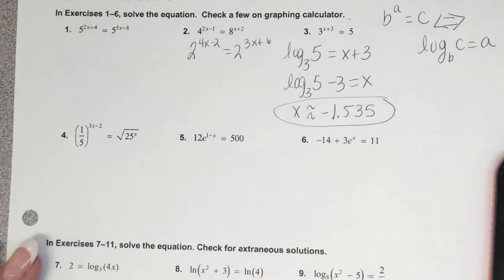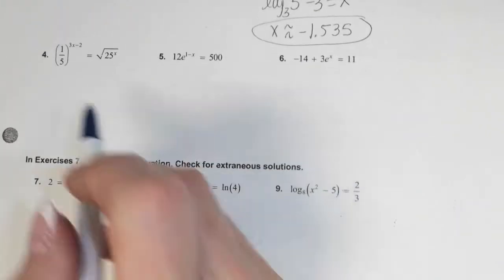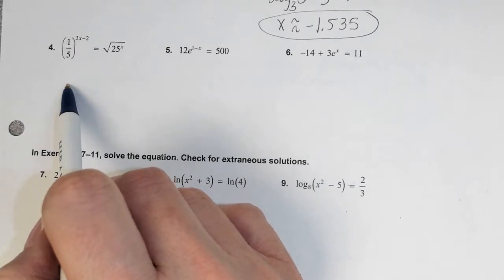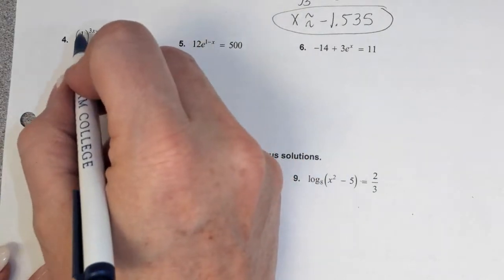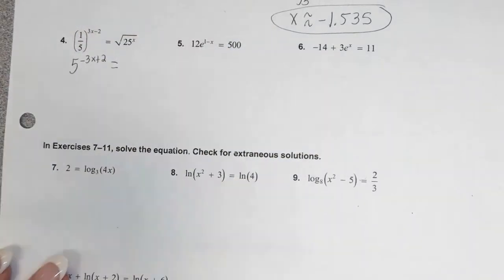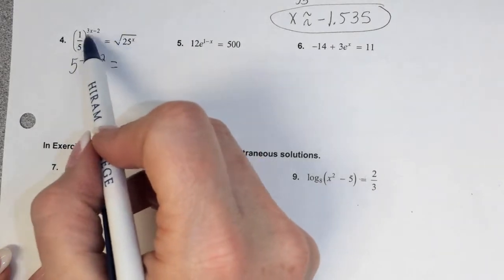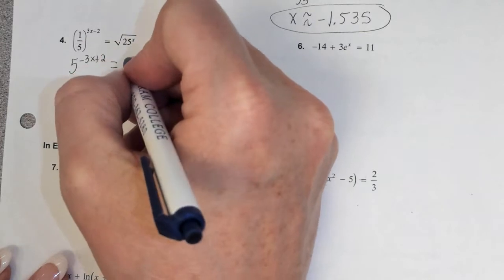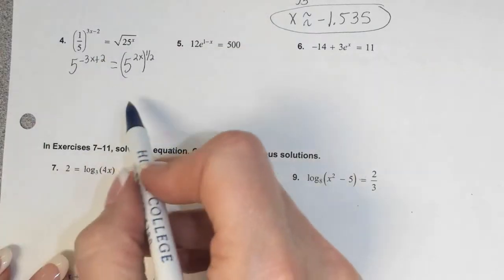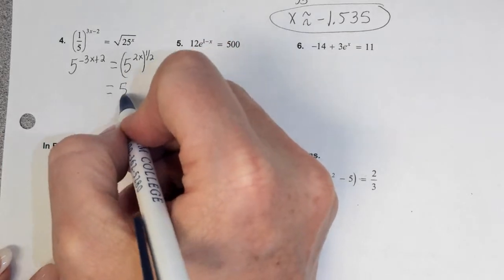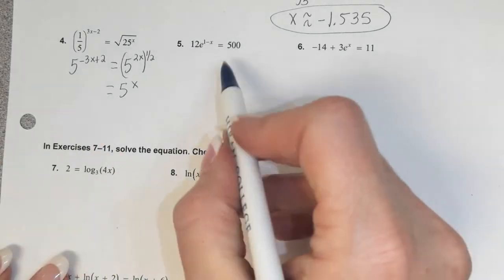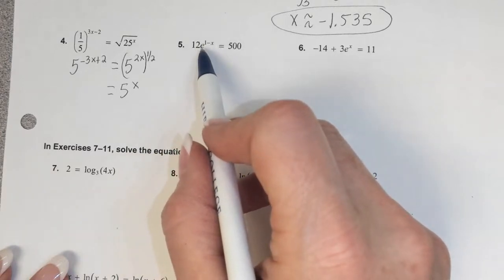Number four: always check — can you get like bases? Yes. So I rewrite one side as 5 to the negative 3x plus 2, distributing the negative 1 exponent. For the other side, I think of it as 5 squared to the x, then taking the one-half power, which simplifies to just 5 to the x. Then we set the exponents equal. We're not going to finish that completely.